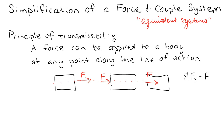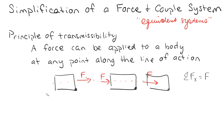Now if I move the force up and down, it might behave in a different way. For example, if it's pinned here and I pushed on it right there, it's going to spin one way. But if I move the force up here, it's going to spin more. Theoretically, putting that arrow up there makes it spin more violently than putting the arrow right here. So I can't move it up and down, but I can move it side to side and have no net effect, because moving it up and down will mess up the moments.